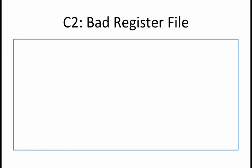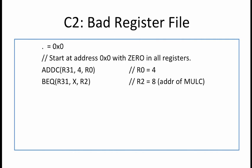When run on C2, which has a bad register file that always outputs a 0, the behavior of the program changes a bit. The ADDC and BEQ instructions, which use R31, which is 0 anyways, behave in the same way as before.